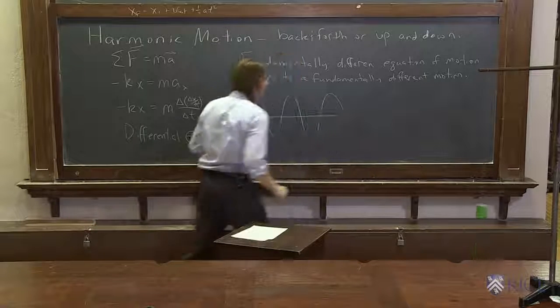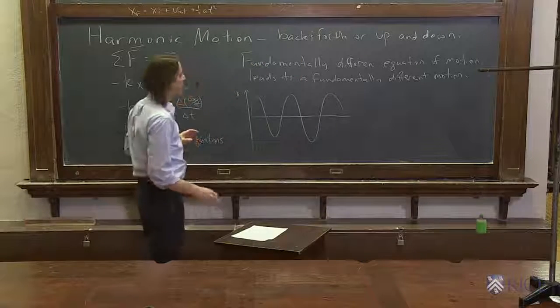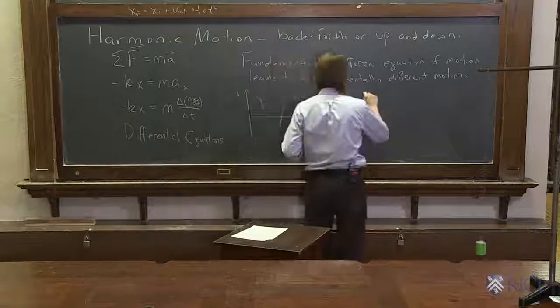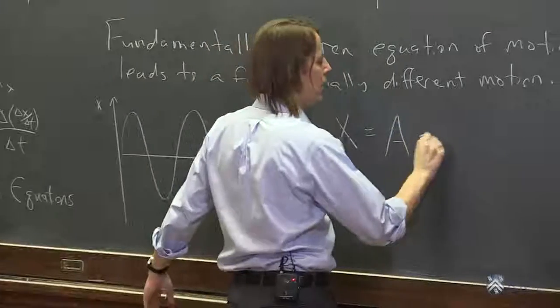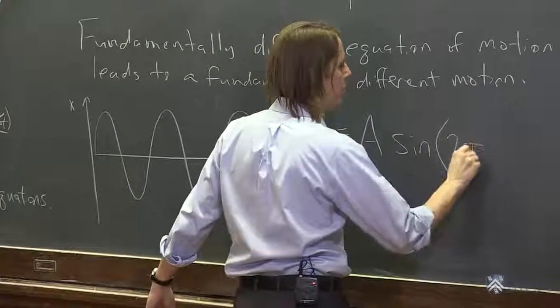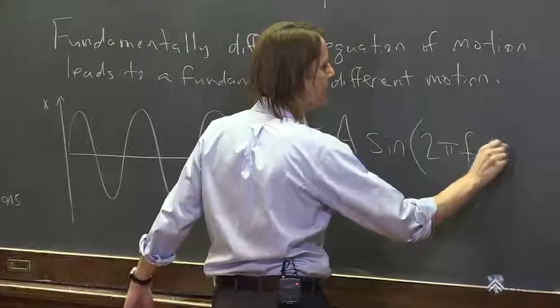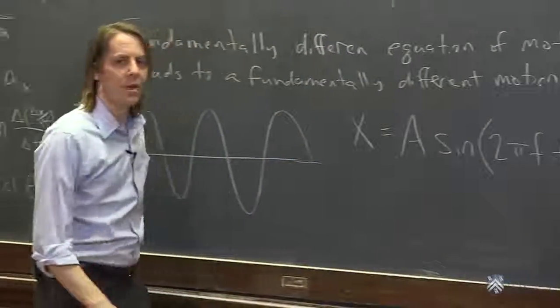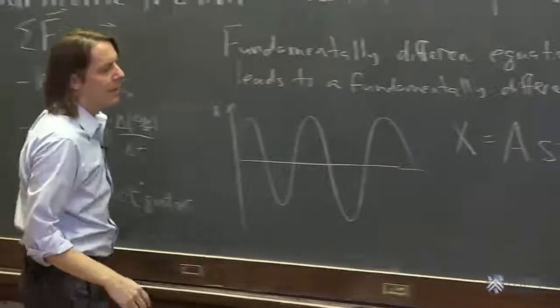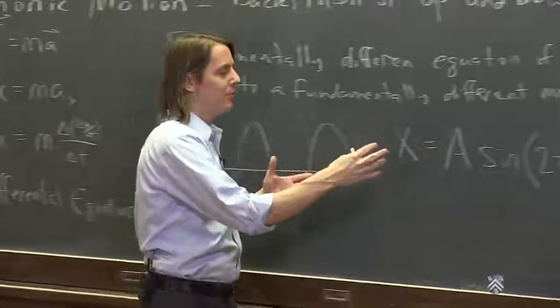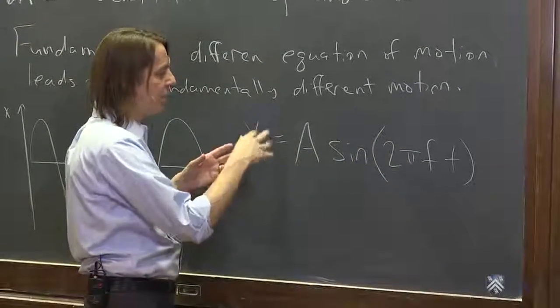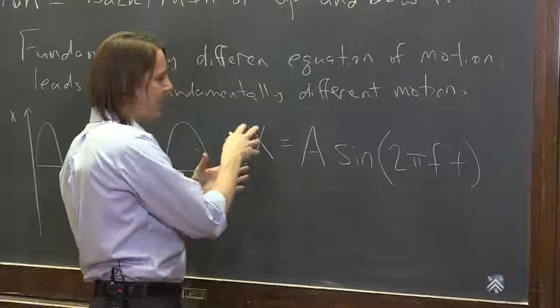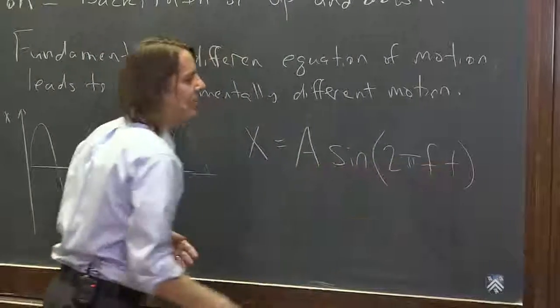This sinusoidal motion, if we were to write the equation, it would look something like this. The position versus time that solves that equation is x = A sin(2πft), sinusoidal motion with respect to time. This is a sine function. You might see it as just y = sin(x). This is the kinematic version where position x is sine of something times time.